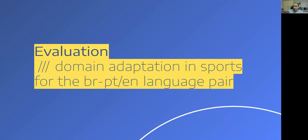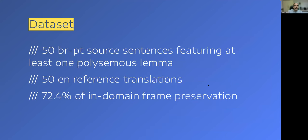To evaluate the two implementations of SILA, we work in the sports domain for the Brazilian Portuguese-English language pair. The dataset is small — this is meant to be a proof-of-concept experiment. It is composed of 50 Brazilian Portuguese source sentences extracted from sports encyclopedias, news pieces, and manuals, featuring at least one polysemous lemma — meaning at least one lemma in the sentence can be translated as either a word in the sports domain or outside of it, much like 'bandeja' as 'lay-up' or 'tray.'